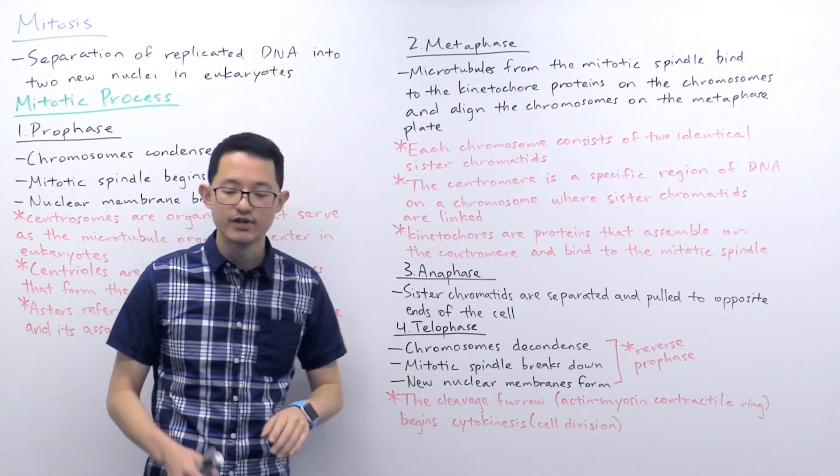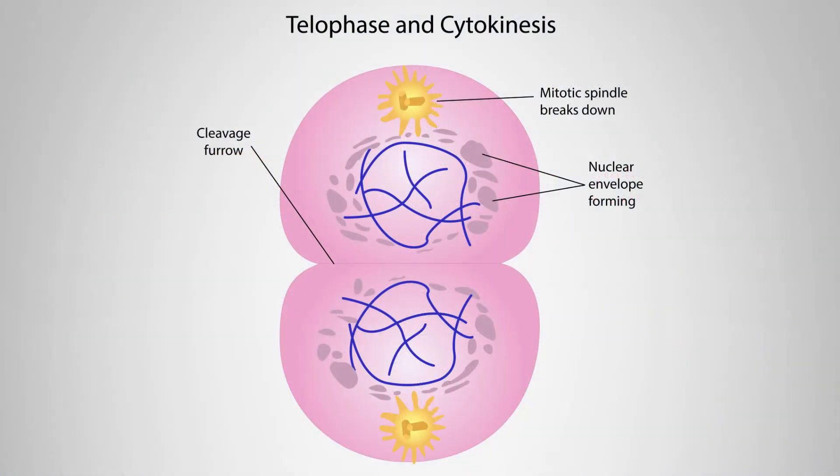In the last phase of mitosis, we have telophase, which you can see in this diagram has three processes and is essentially reverse prophase. Here the chromosomes are going to decondense, the mitotic spindle is going to break down, and new nuclear membranes begin to form.